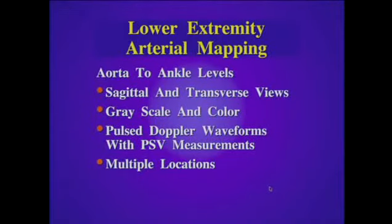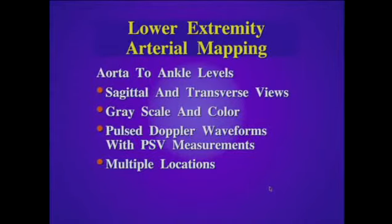When we perform lower extremity arterial mapping, we can start at any level. Many times we'll begin at the abdominal aorta near the iliac bifurcation and sweep down to the level of the ankles. This examination will include both sagittal and transverse views using grayscale and color Doppler to identify sites of calcification and abnormal flow. We'll also use pulse Doppler to evaluate waveforms and peak systolic velocities at multiple locations.